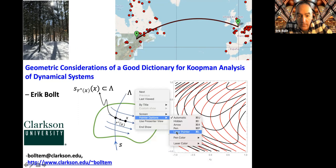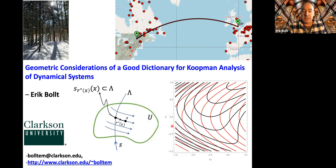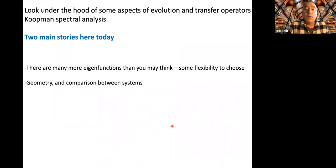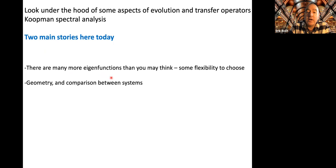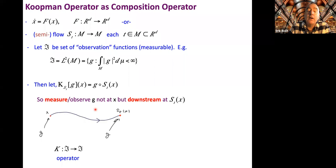And then a second very related part, which is actually a different paper but uses many of the same tools. We'll see how far we get. So this is a bit of a look under the hood — looking inside the engine of a car — on evolution operators, transfer operators. And very much trending right now is Koopman spectral analysis. I come from the Frobenius-Perron operator side, and it's nice to move across the bilinear form to the Koopman side.